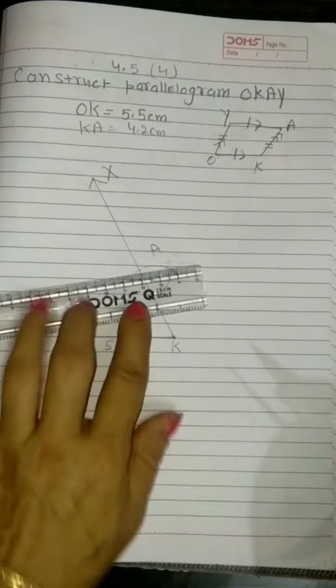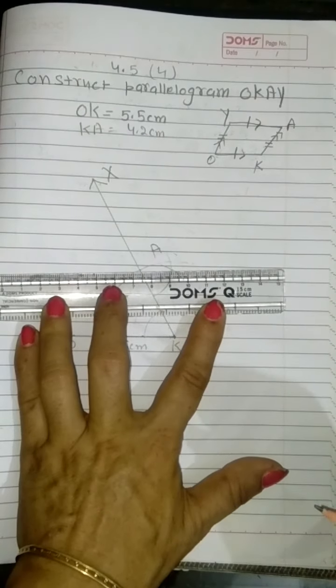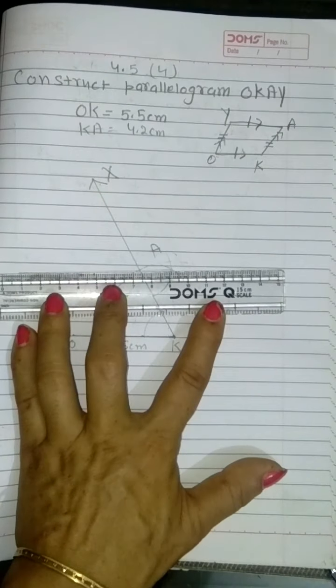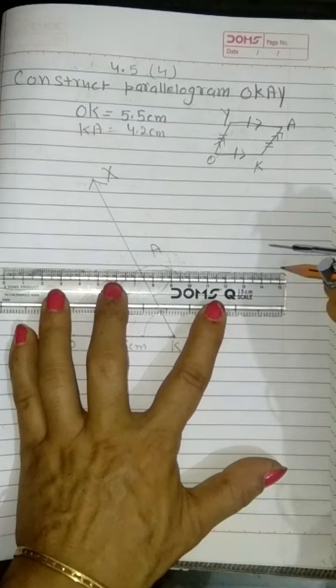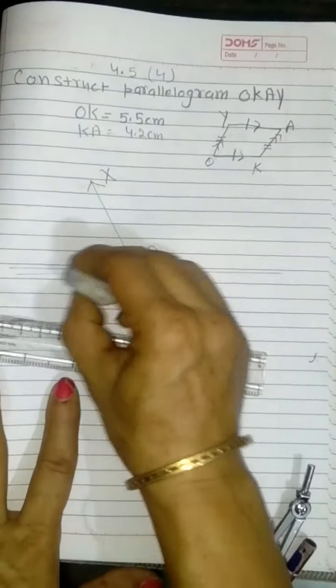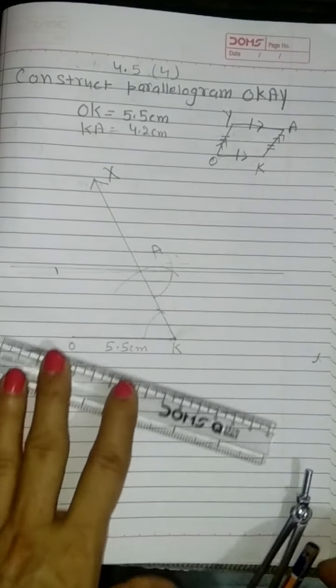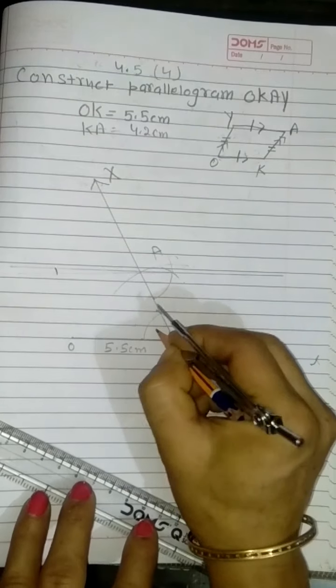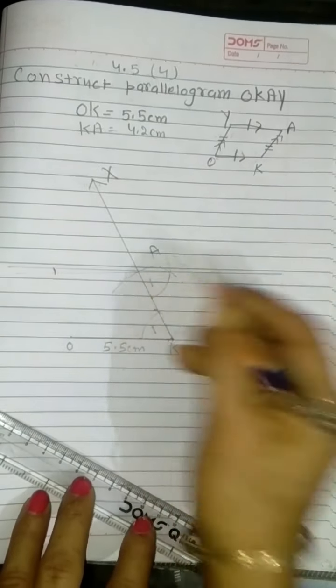In this way what I did: I have drawn here the copy of this angle. Suppose it is angle 1. So this is 1.